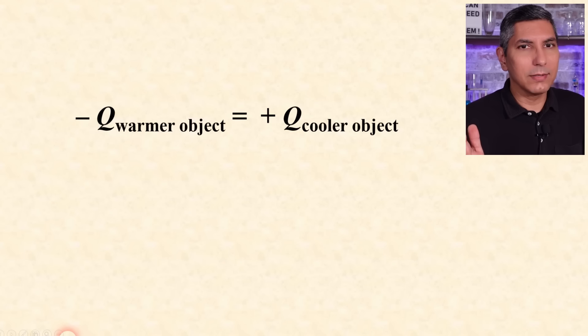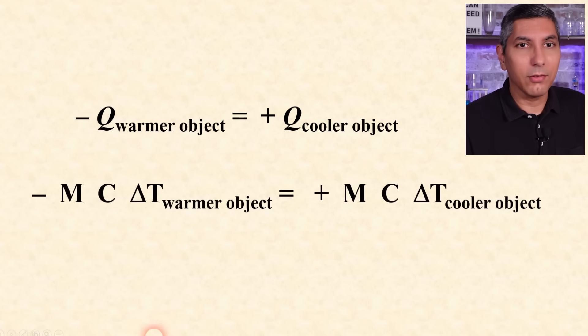Since energy is conserved, the heat gained by one system is equal to the heat lost by another. So if we have two systems in contact, we might use this equation twice and say that the heat gained by one system equals the heat lost by another, which can also be written like this.